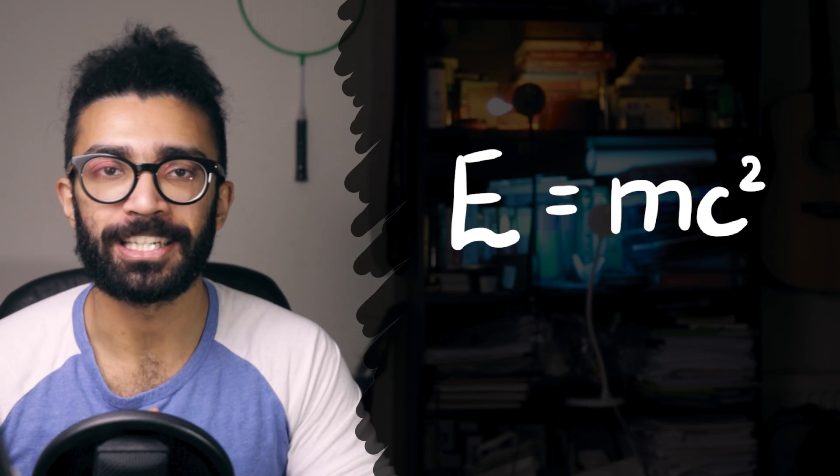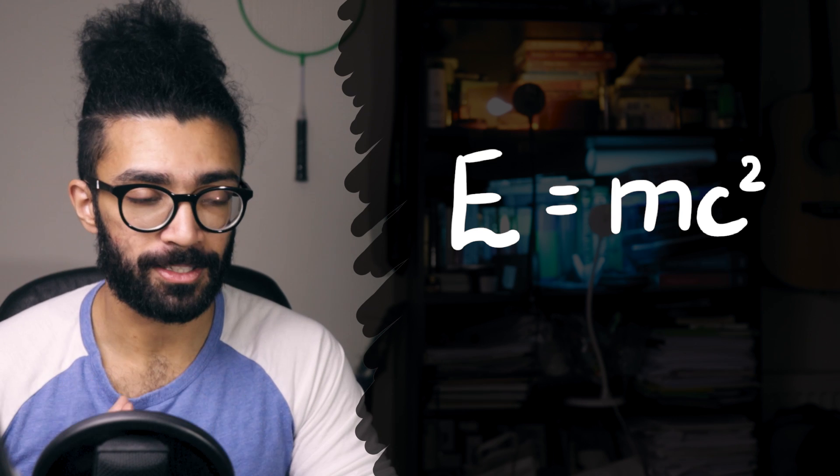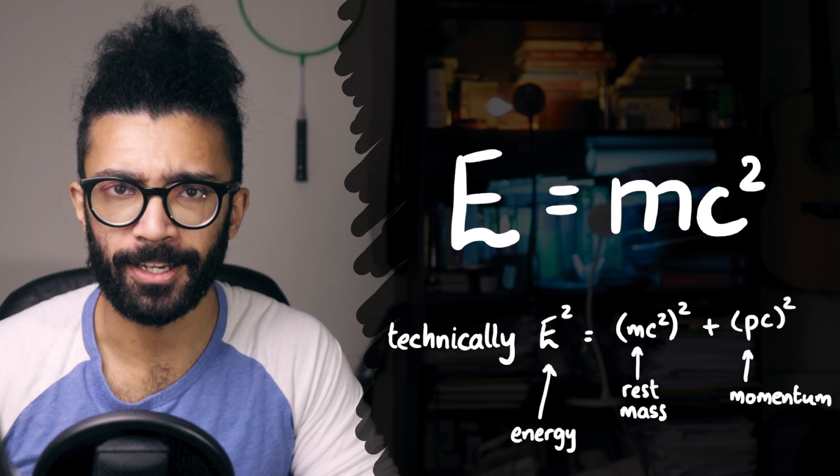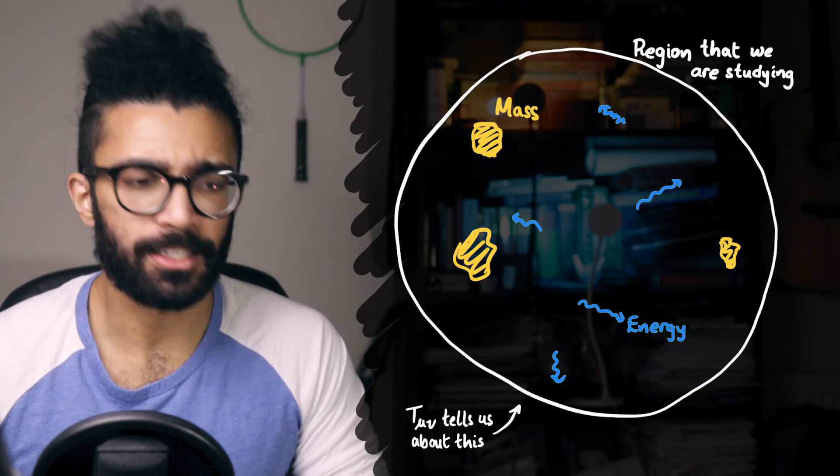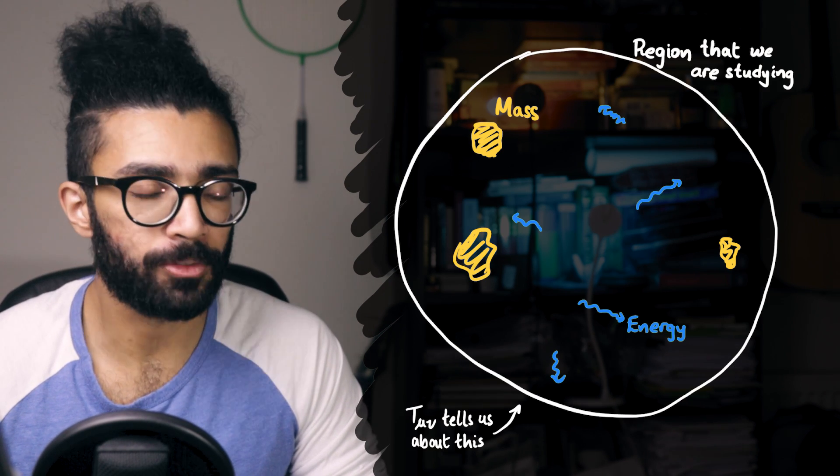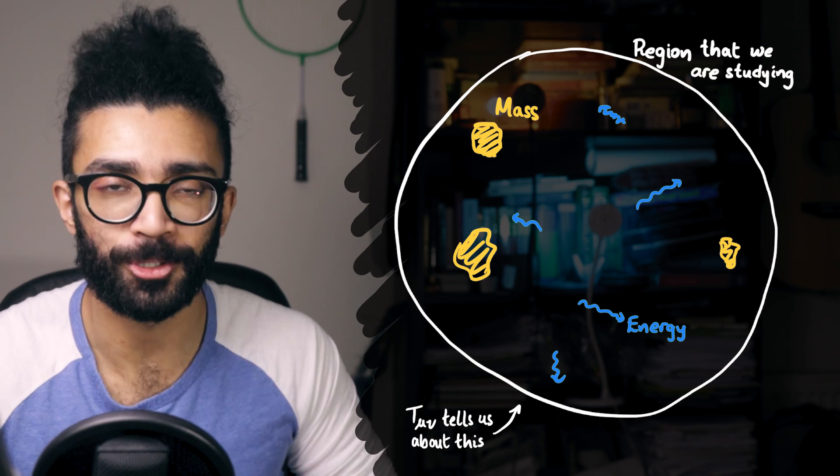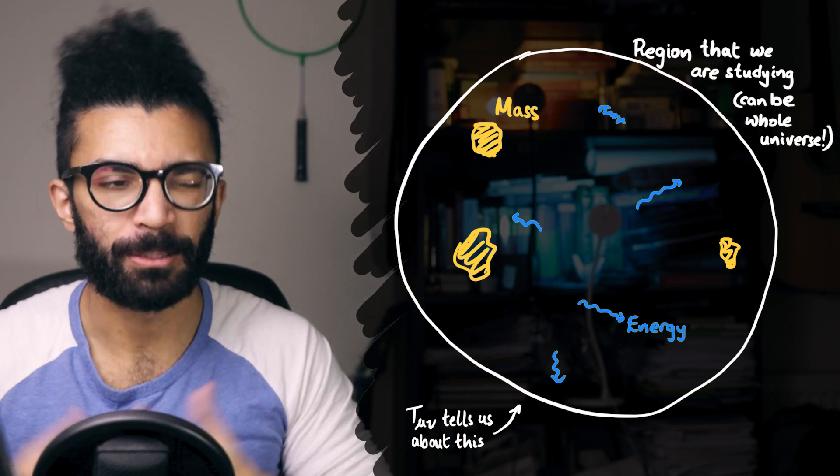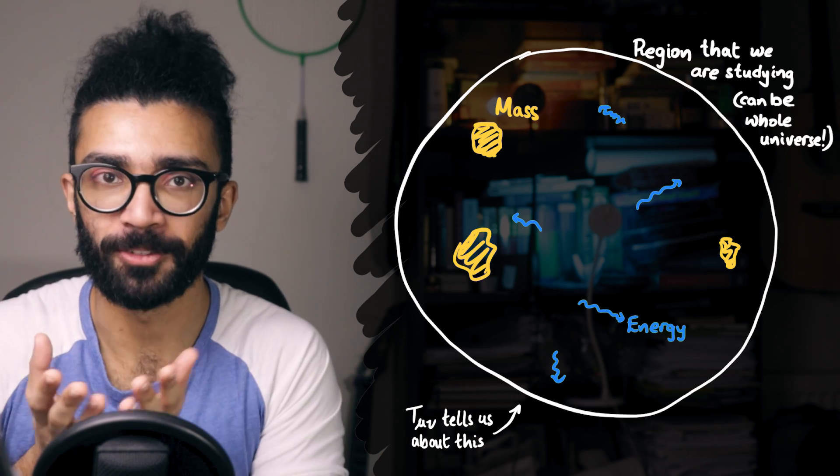According to Einstein's famous equation, E is equal to mc squared, though, of course, this is a slightly simplified version of that equation, but it still conveys the same idea. And the stress energy tensor essentially contains information about how this matter and energy is distributed throughout the region of spacetime that we happen to be thinking about. In many cases, it's actually the whole universe, but that's cool too.